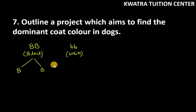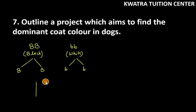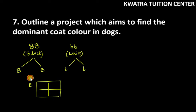So for the male dog, capital B and capital B will be made as gametes. And for the female dog, we will have small b and small b. So these are our gametes. Now let's make them cross.